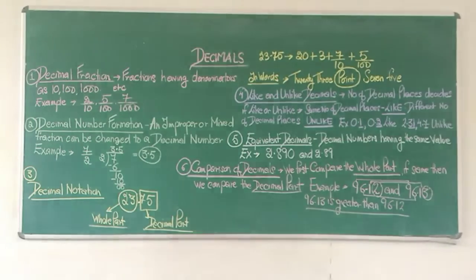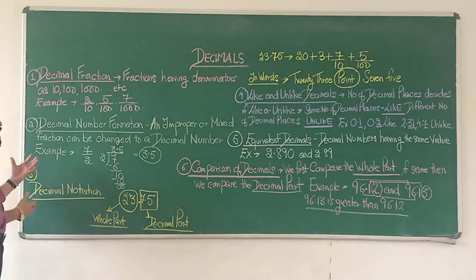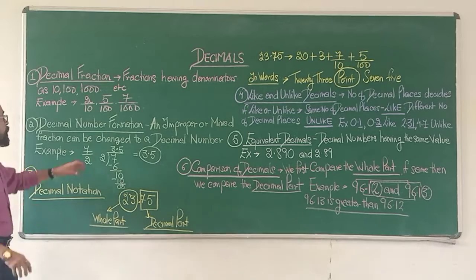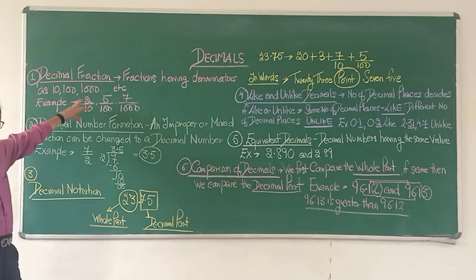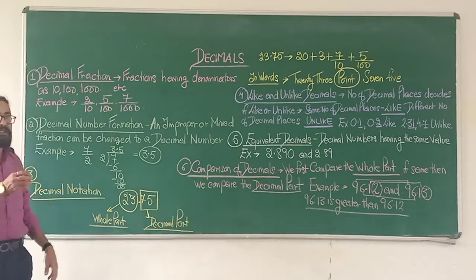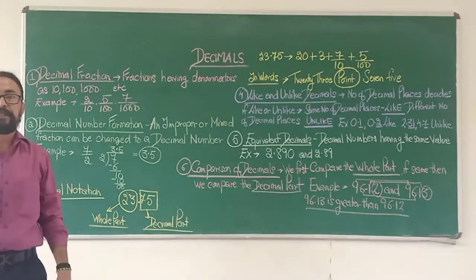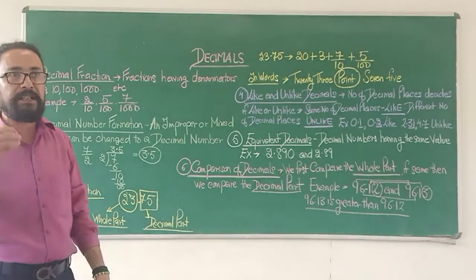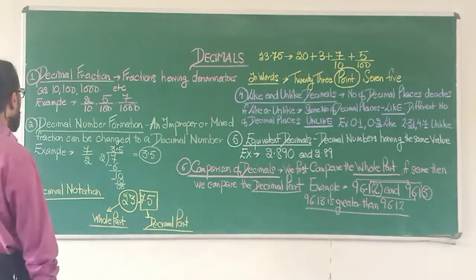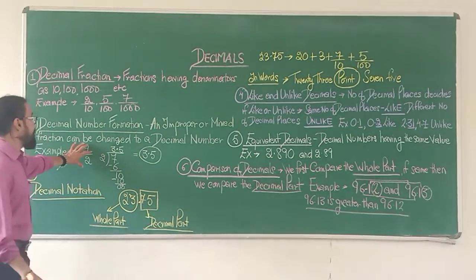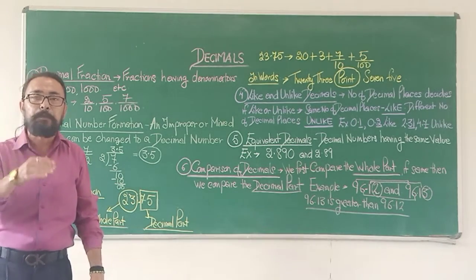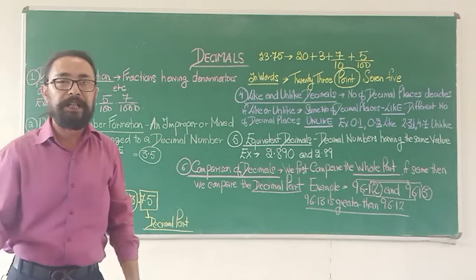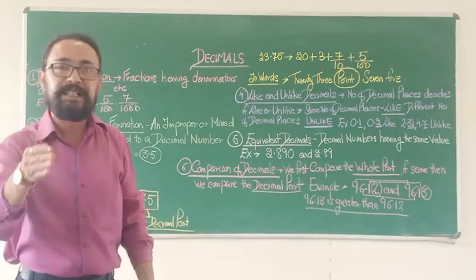We come to the next concept: decimal number formation. How can a decimal number be formed? A decimal number gets formed when you have a simple or proper fraction having denominators as 10, 100, 1000, 10,000, or similar powers of 10. Or else, if it is an improper fraction and it cannot be divided completely by the denominator leaving no remainder, it forms a decimal number.